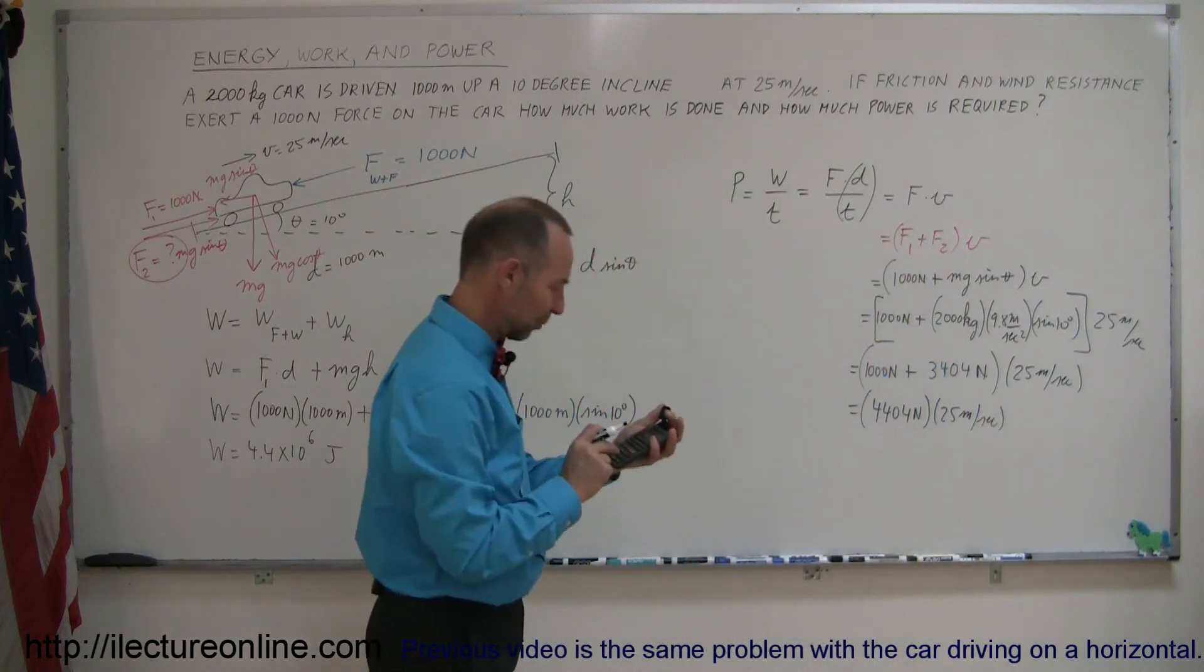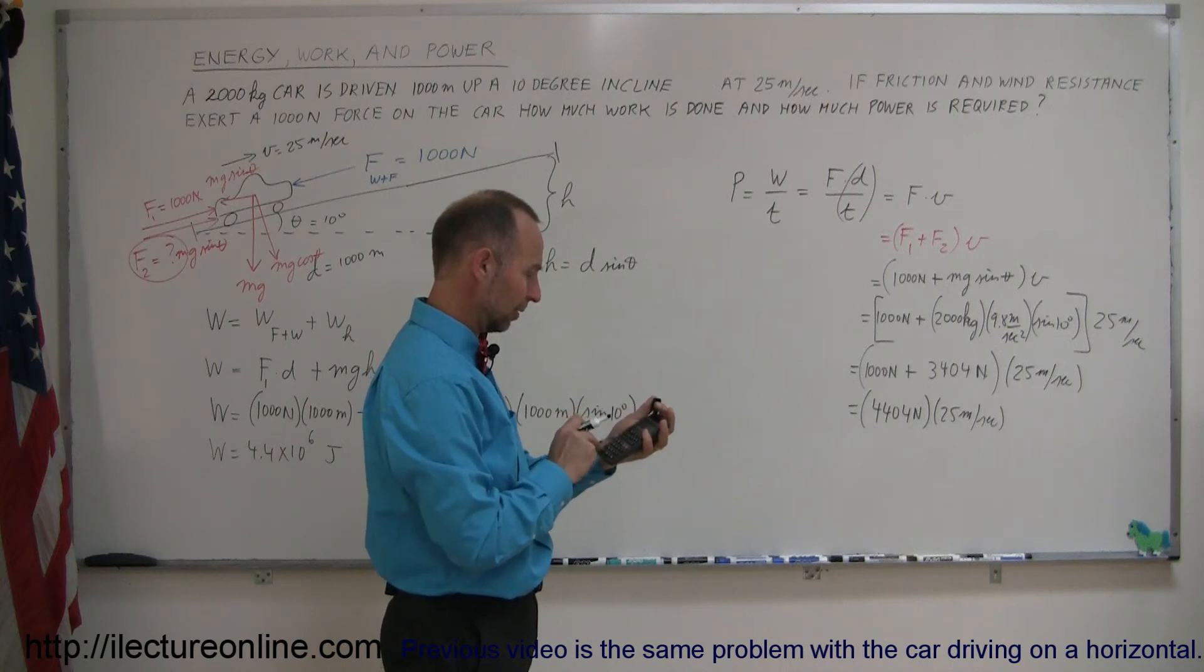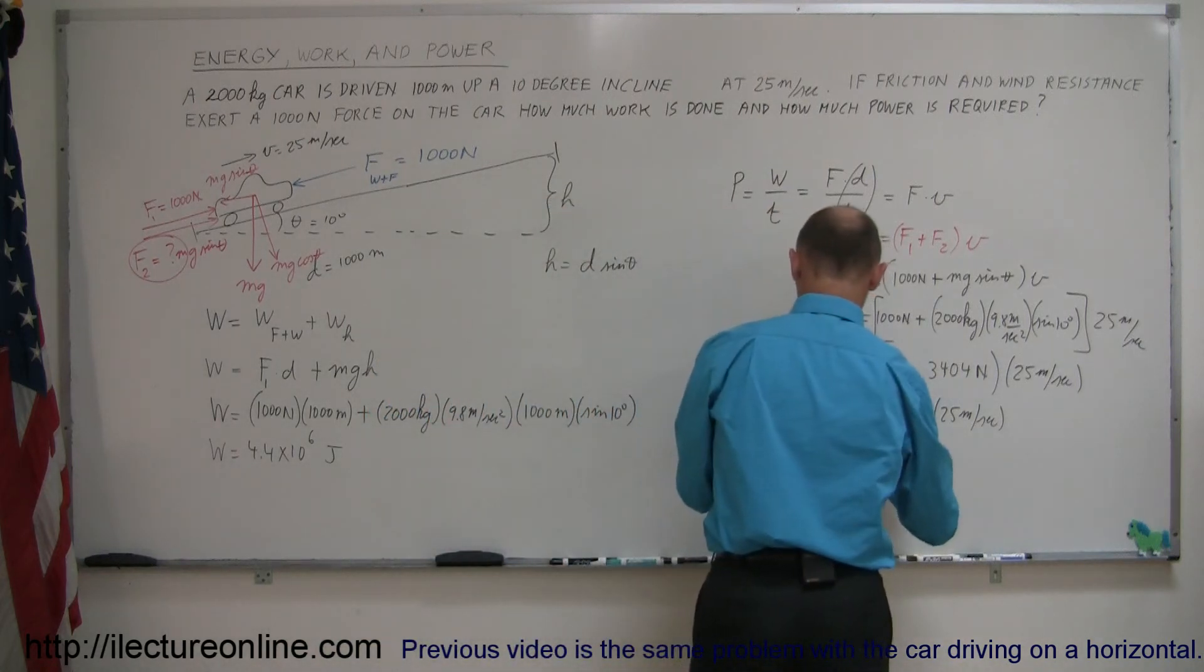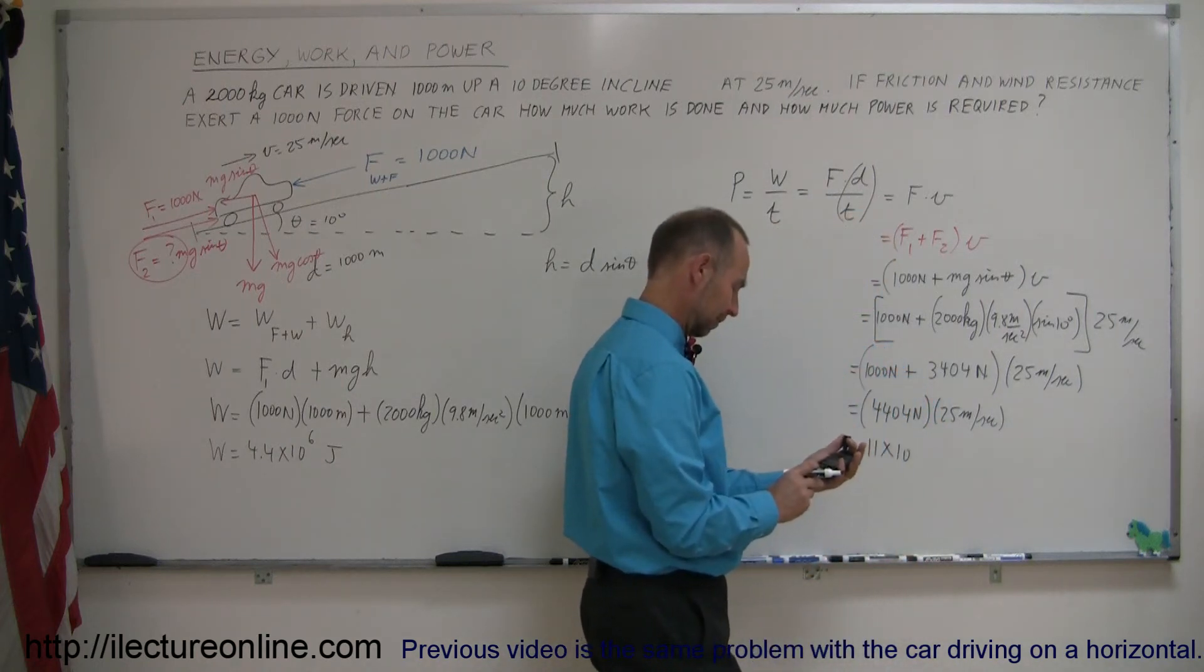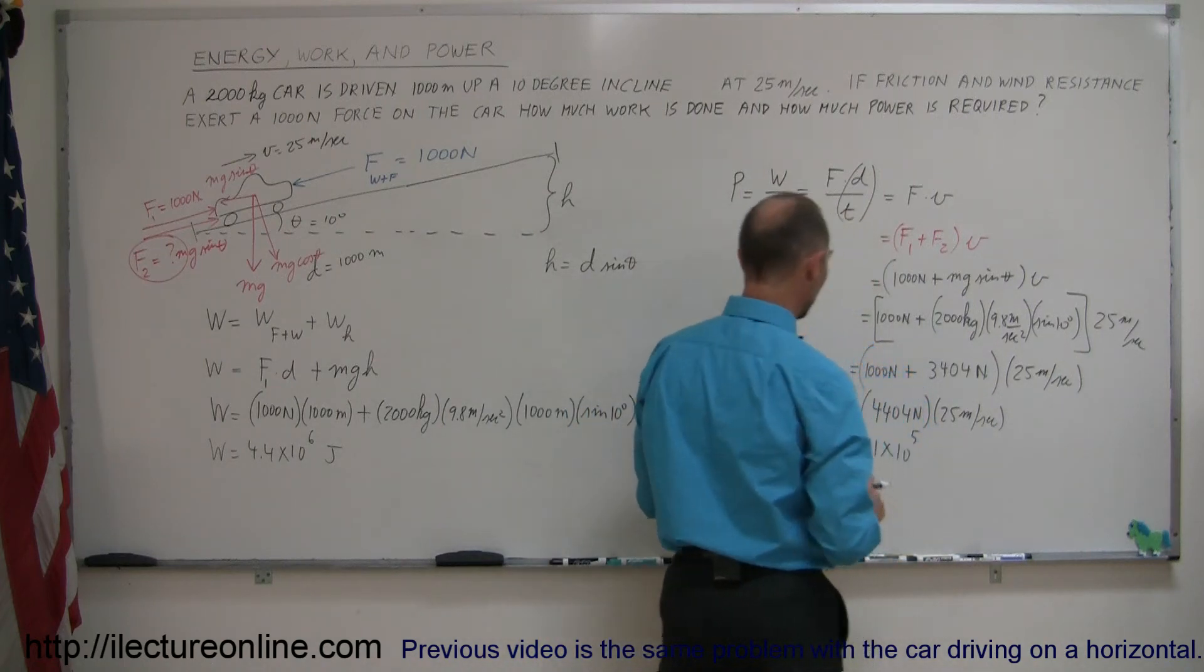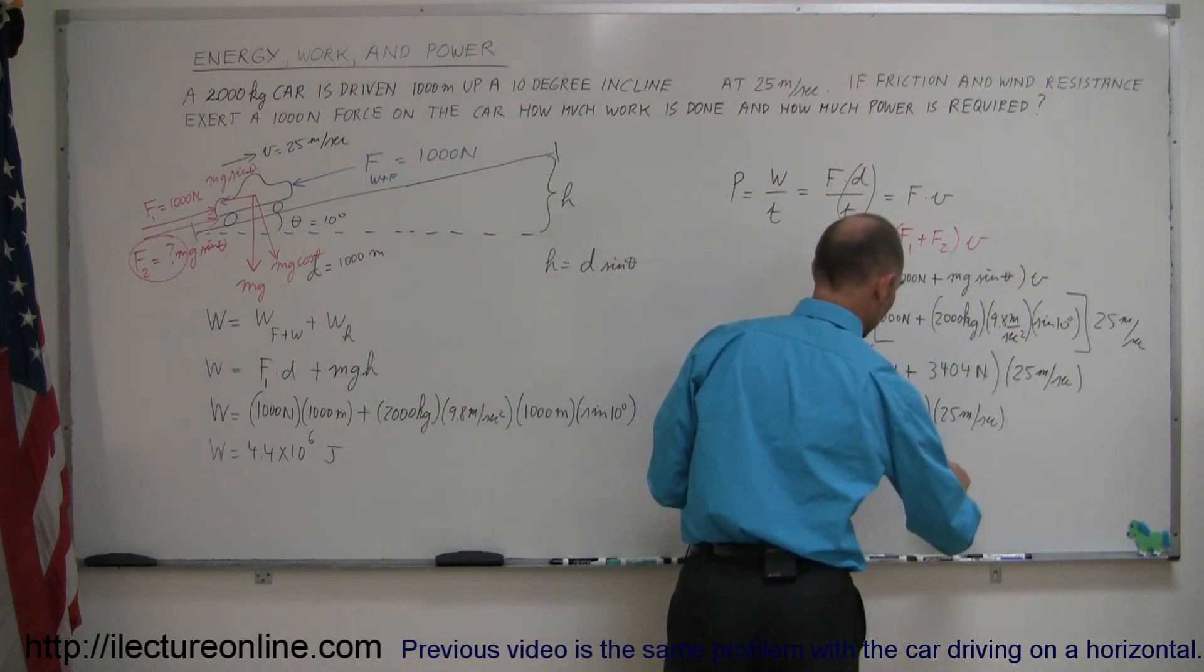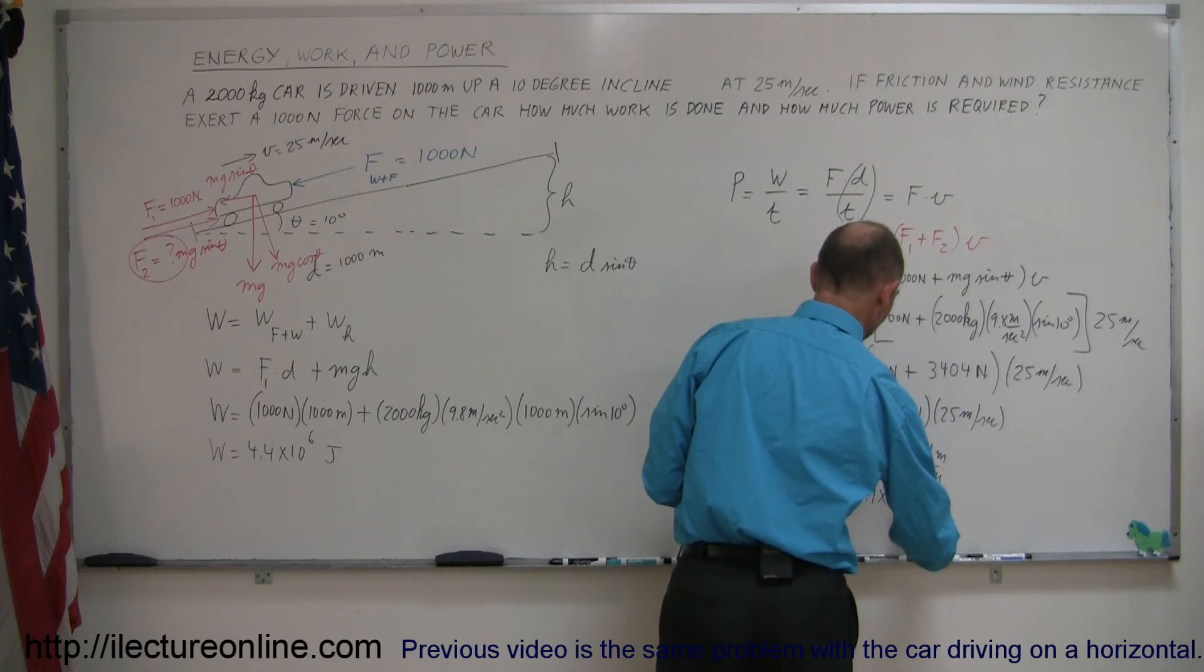And so, we multiply times 25 meters per second, and we get 1.1 times 10 to the fifth. Let me make sure I did this correctly. So, we have 1.1 times 10 to the fifth. And what are the units? Power, that's going to be newton meters per second. So, it's equal to 1.1 times 10 to the fifth watts.